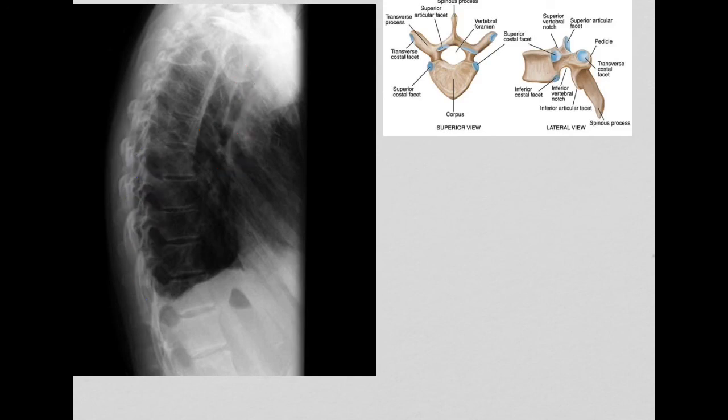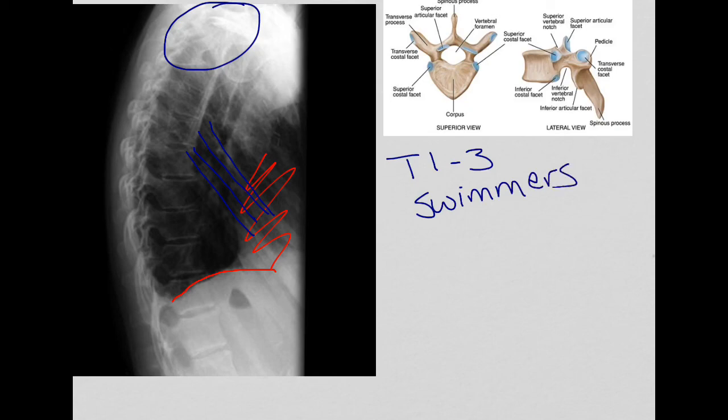Of course, you've got your superimposed hemidiaphragms. You've got heart shadow through here. You've got ribs running down this direction. You're not going to get a good look at T1, 2, or 3. T1 through 3 are not very visible on this projection. Therefore, you would need to do a swimmers if that was your area of interest.